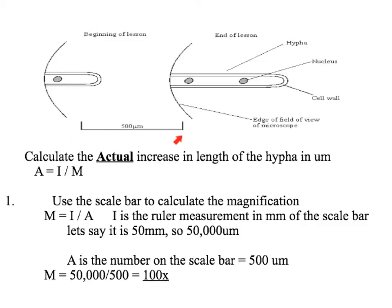Whatever the size is on the screen is the image size, so use your ruler to work out the image size. The length of this scale bar is 50 millimetres, so 50,000 micrometres. Because the unit here is micrometres, we need the image length in micrometres. We measured it to be 50 millimetres, so it's 50,000 micrometres.